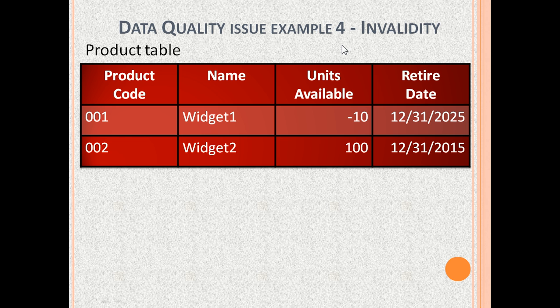The fourth data quality issue is invalidity. Here is the product table with columns: product code, name, units available and retire date. Units available is negative in this row, which is impossible. Also, Widget 2 is already retired but still present in this table.